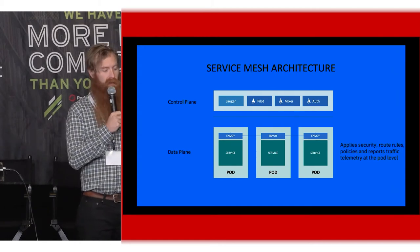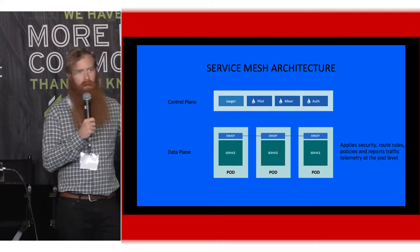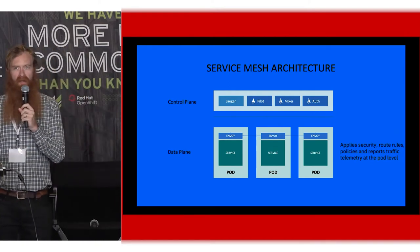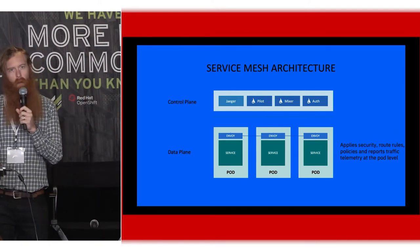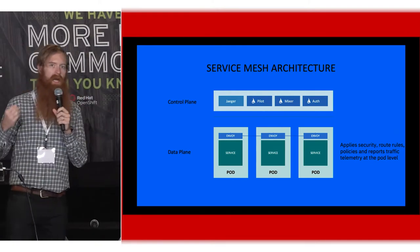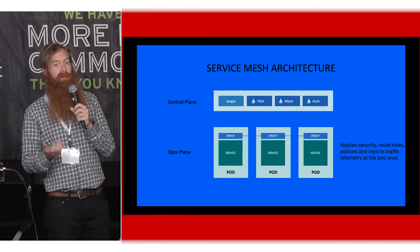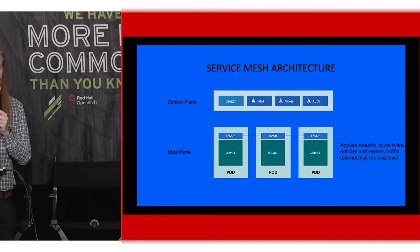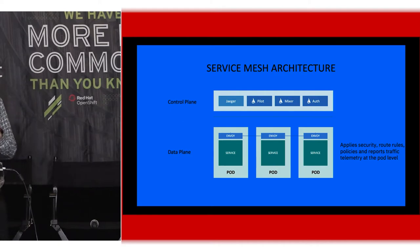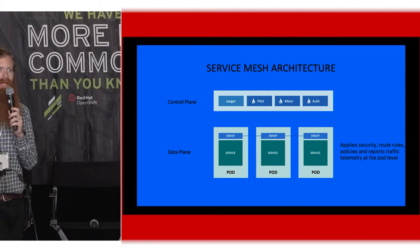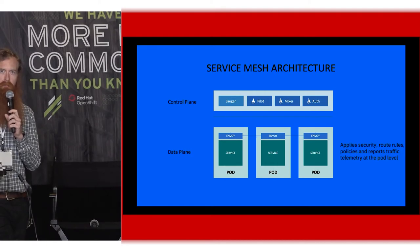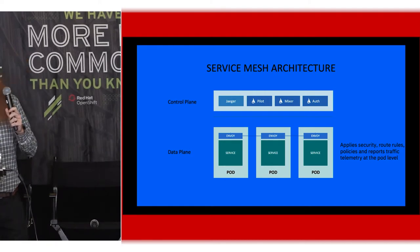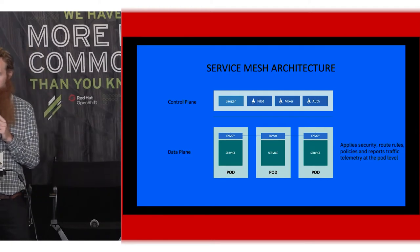What we actually have here are a number of control plane services like Pilot, Mixer, Citadel, and Galley, which are all there to handle discrete components of the way Istio actually operates. And then another component called Istio Proxy, which is actually derived from the CNCF project Envoy. With this, we collocate a number of containers together within a pod within Kubernetes. That collocated sidecar for Envoy actually executes much of the functionality of Istio in concert with the control plane itself.